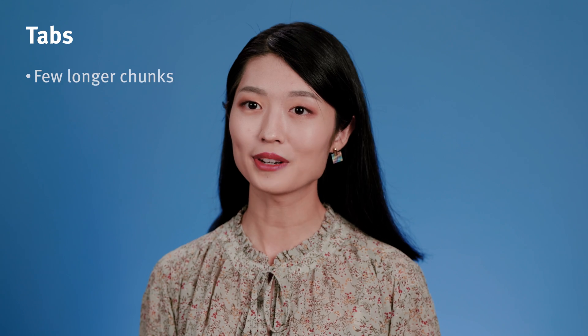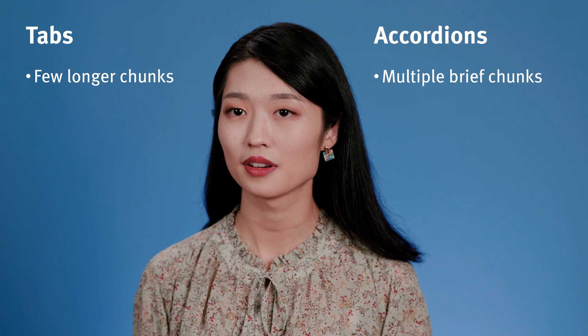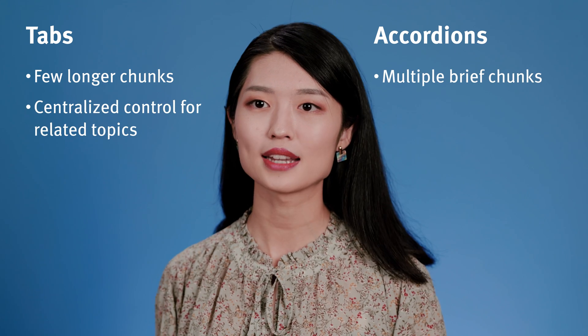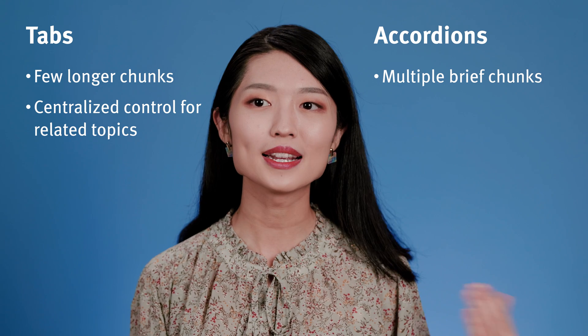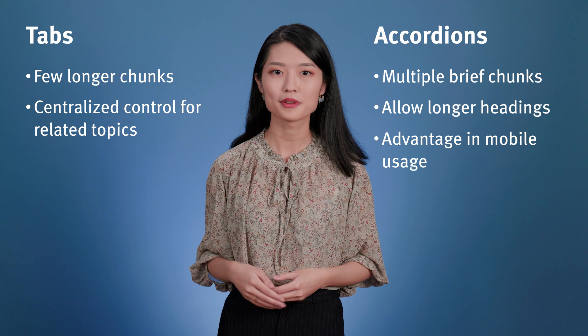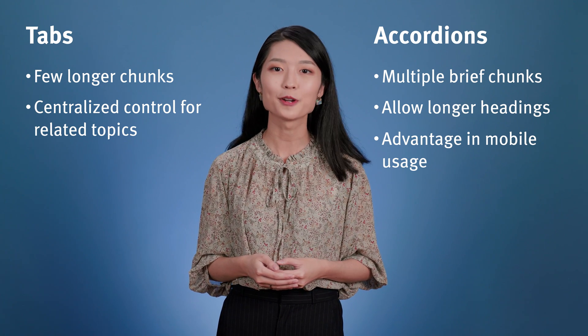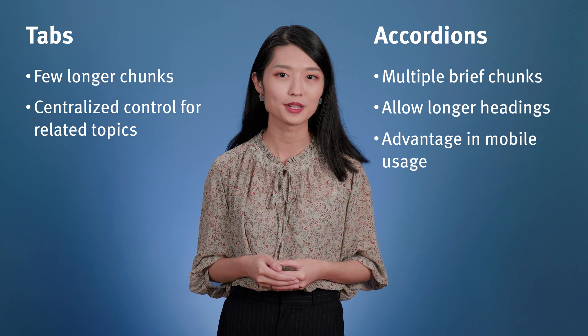In short, tabs are great for just a few content chunks with longer sections, whereas accordions work best with multiple chunks that are brief. Tabs provide a centralized component for related topics, while accordions have more flexibility in heading length and shine on mobile usage. Both tabs and accordions struggle to provide the ability to compare across sections and require logical chunking to be usable. By considering your user needs and weighing the benefits and trade-offs of each option, you can make informed decisions between tabs and accordions, and use them to structure your content more effectively.